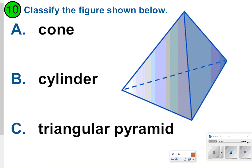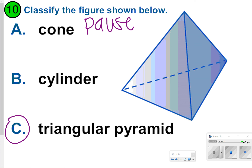Number ten, another multiple choice. Go ahead and pause it, try it, and once you're done, click play. This one is going to be considered C, a triangular pyramid, because it has a triangle as a base, goes to one point, and has triangles as its faces.